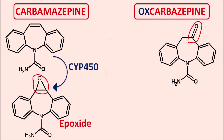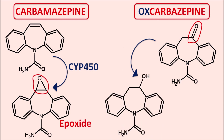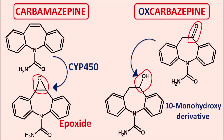On the other hand, oxcarbazepine is converted into a different metabolite that has a hydroxyl group at the 10th position. This is the 10-monohydroxy derivative, commonly known as MHD. This 10-monohydroxy derivative is the active metabolite of oxcarbazepine, and this reduction takes place rapidly without any significant involvement of the cytochrome P450 system.